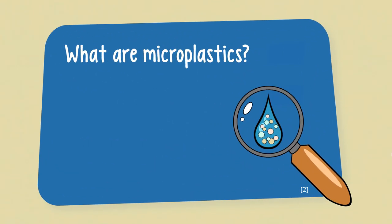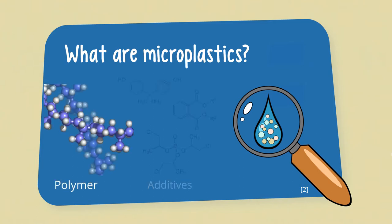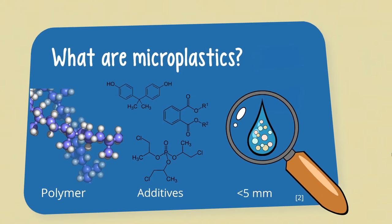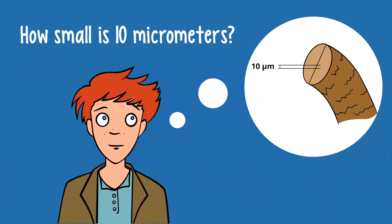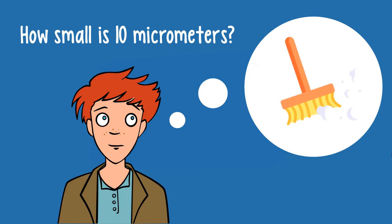What exactly do scientists mean when they say microplastics? The term refers to solid plastic particles consisting of polymers and additives. Micro means they are small, at least smaller than 5 mm. Most microplastics are smaller than 10 micrometers. This is about one tenth of a hair and even smaller than the dust particles on your floor.